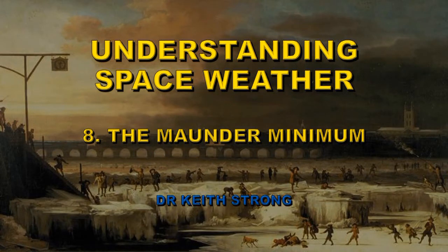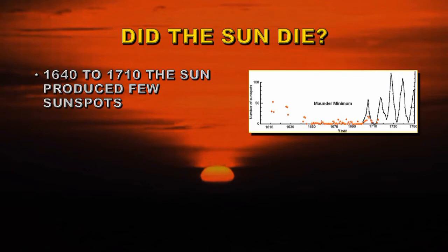Welcome. This is the eighth in a series of videos about understanding space weather. This one is going to be about the Maunder Minimum. The Maunder Minimum is a period from 1640 to 1710 when the Sun apparently produced very few sunspots. You can see it here marked in red on this curve.